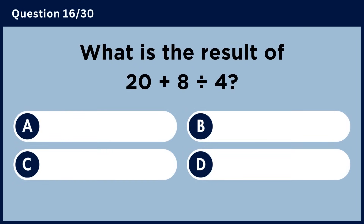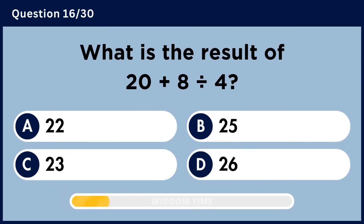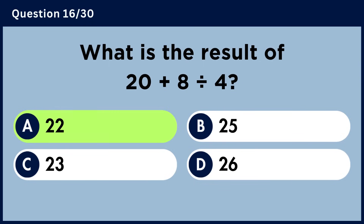What is the result of 20 plus 8 divided by 4? Answer A, 22.